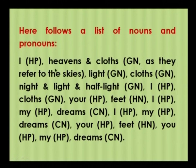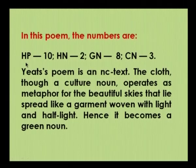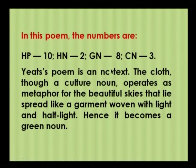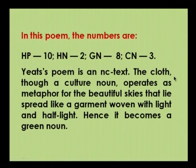Once we are able to identify the human pronouns, green nouns and cultural nouns, we can calculate the green density measure. In this poem the numbers are: human pronouns = 10, human nouns = 2, green nouns = 8, and culture nouns = 3. This poem is a small n, small c text — the sacred element is not there, and we are not primarily talking about nature or culture, but about human beings. The cloth, though a culture noun, operates as a metaphor for the beautiful skies woven with light, and hence becomes a green noun.